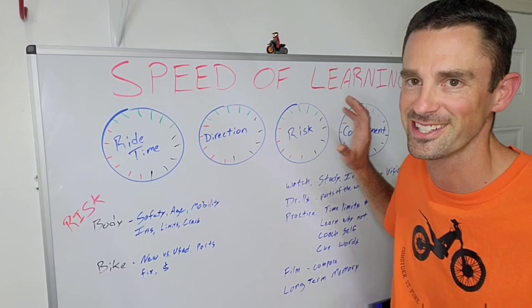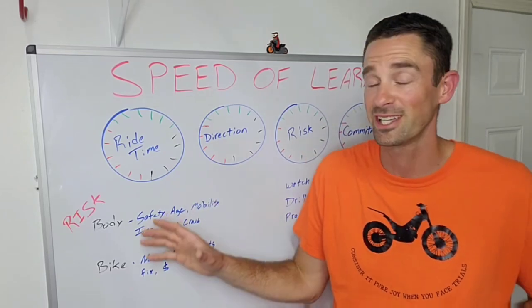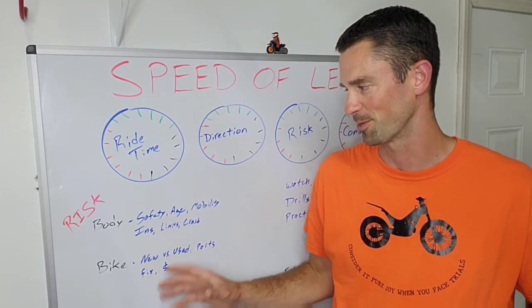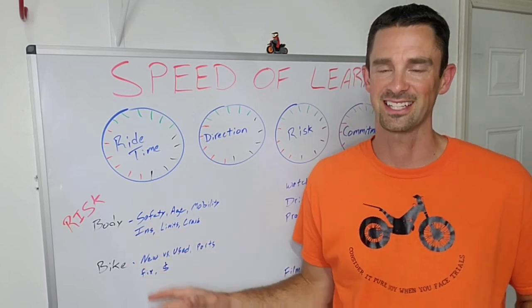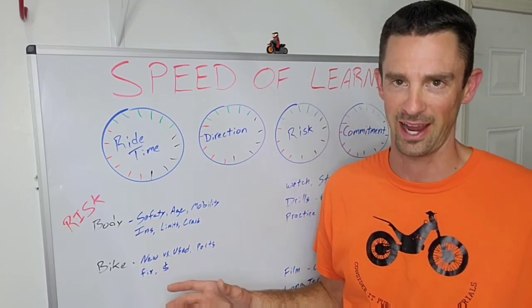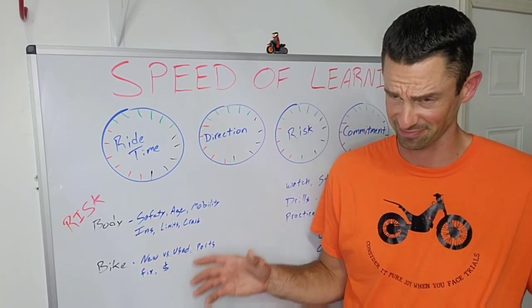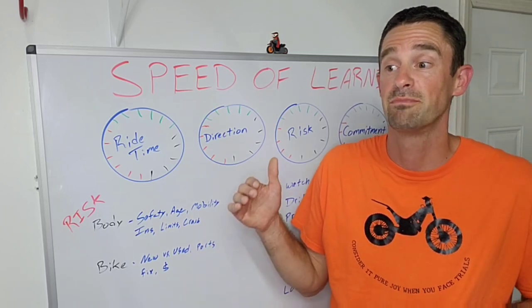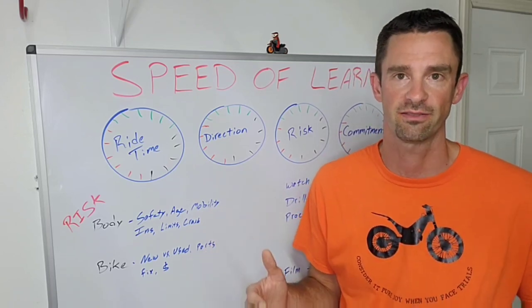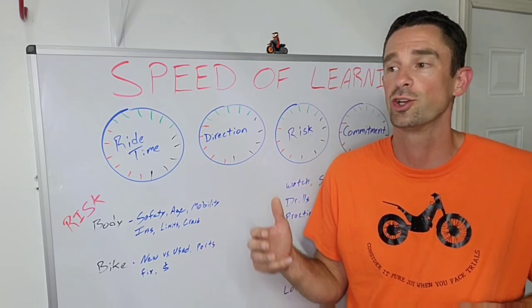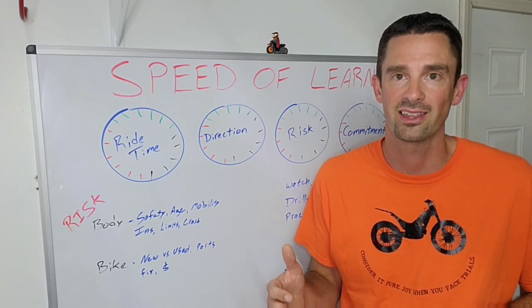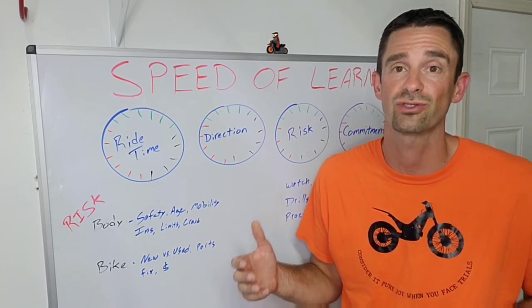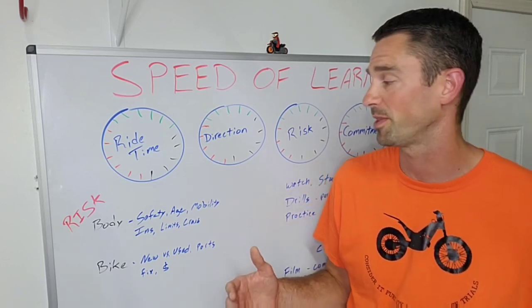So when it comes to this risk dial I definitely want to talk about the risk to your body as well as also to your bike. When it comes to your body, things like safety play a huge factor in your ability to continue riding. If you get hurt you're not gonna be able to progress and someone's potential to get injured is dependent upon a lot of different variables. So your age, your mobility, your strength, how physically fit you are, how strong your core is, all those things are gonna play a factor.